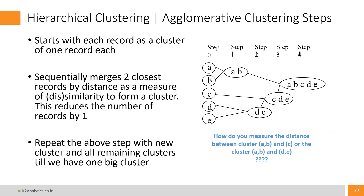Let's now see the algorithm of agglomerative hierarchical clustering. Let us assume you are trying to do clustering of 100 stores. You've got your own retail outlets, some 100 outlets spread over the city or state, and you are trying to do clustering of these stores. The first step is: each record, each object — in this case, each store — would be considered as a cluster of one, which means you have got 100 clusters, each cluster having only one store.